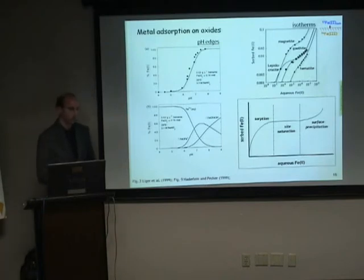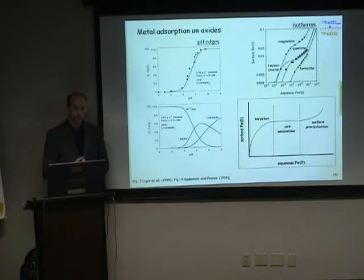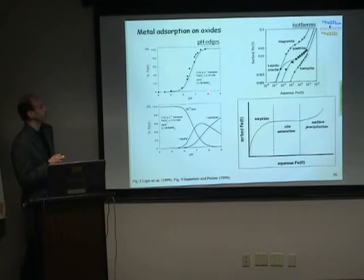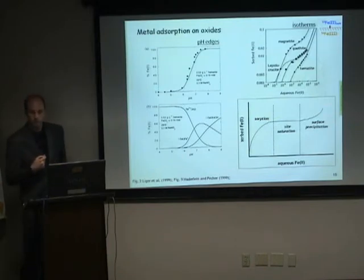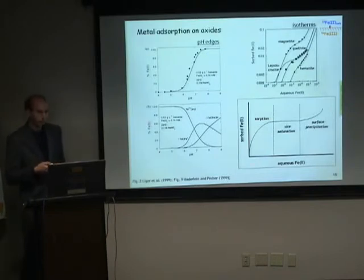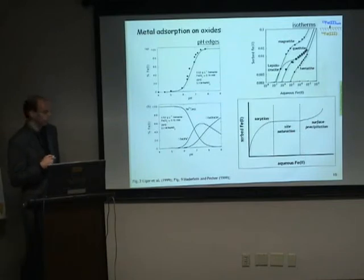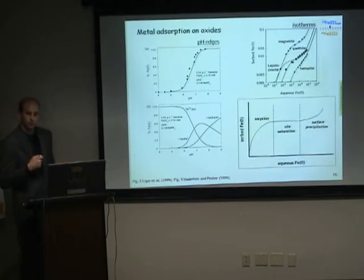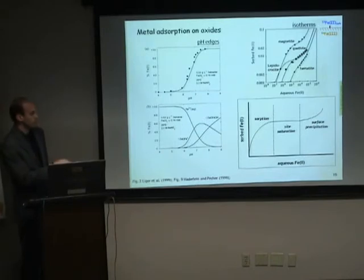That work was done at one solution condition, but we're interested in environmentally relevant conditions. We wanted to get spectroscopic evidence for this process over a range of solution pH — for example, examining the uptake of dissolved Fe2+ on surfaces as a function of pH in the form of a pH edge. Another way to examine these kinds of surfaces is to vary the aqueous Fe2+ concentration into a sorption isotherm, where a few different regimes in the sorption of Fe2+ can be observed.